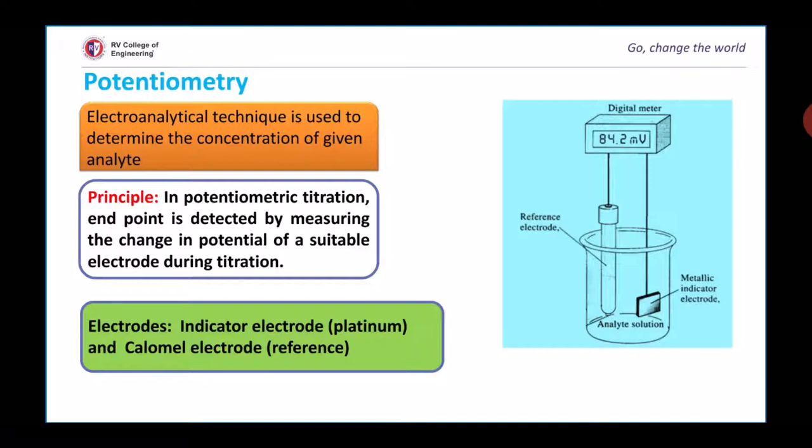The electrode whose potential depends upon the concentration of ions to be determined is called the indicator electrode. You know very well it is impossible to measure the potential of a single electrode, so it is combined with a reference electrode directly to form a cell.